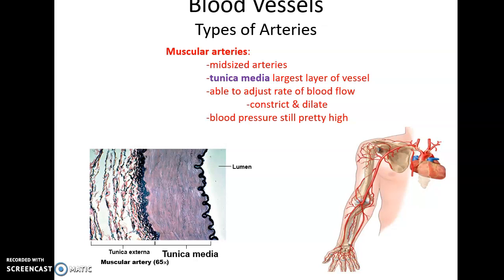Elastic arteries will eventually branch into smaller arteries, and you'll get down to the muscular arteries. Muscular arteries have a large tunica media — the thickest layer for muscular arteries is the middle layer where the smooth muscle tissue is found. They help to control blood flow by vasoconstriction and vasodilation. The blood pressure in muscular arteries is still pretty high. In fact, the blood pressure we talk about when we measure blood pressure is actually coming from muscular arteries, specifically ones in the arms.